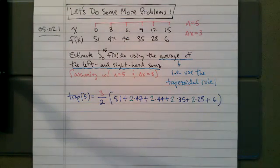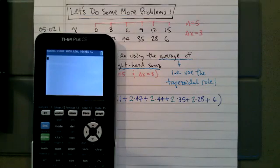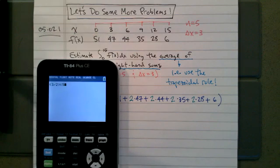And then, this looks like a lot of adding and subtracting, so I'm definitely going to have my calculator do that. So I'm going to have delta x divided by 2, because we're making an average, and I have a 51, two 47s, two 44s, two 35s, two 28s, and one 6. So 547.5.